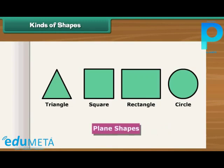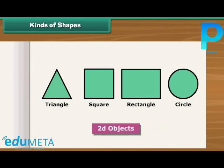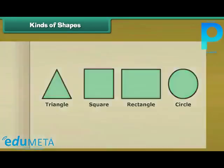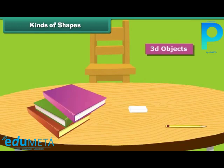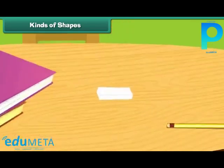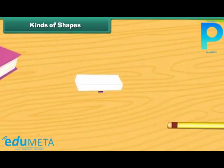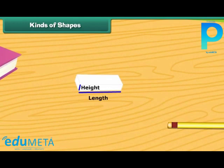Plain shapes are also known as 2D objects. Solid shapes are also known as 3D objects. All 3D objects have depth, which 2D objects do not have.